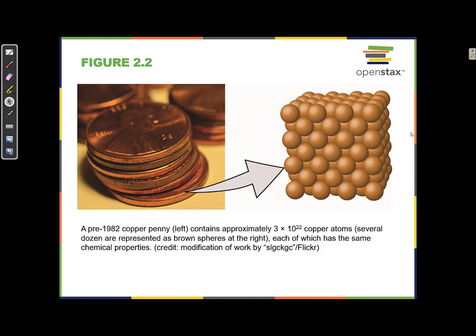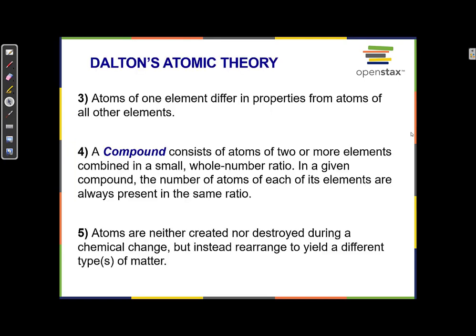Here's an example of what those atoms might look like in a copper penny. All of those spheres, all the copper atoms. If we had a really powerful microscope and we could zoom really close into that penny, this is kind of what it would look like. A bunch of spherical atoms all smashed together. The third postulate is that atoms of one element differ in properties from atoms of all other elements. So in this way you can tell them apart. Atoms have their own unique properties.